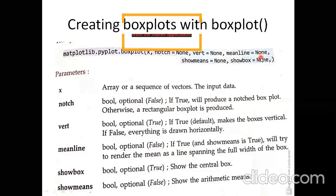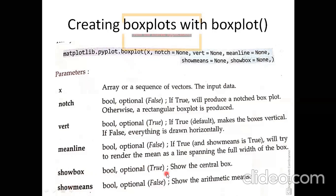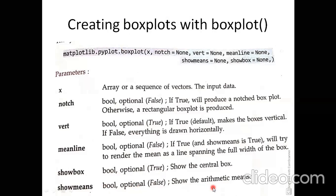showboxes controls whether the box is shown. If you do not want the box but only the five points visible, you can set this. Everything is optional — it all depends on whether you want to use it. showmeans is also there — if you want to show the arithmetic mean, pass true; otherwise pass false.